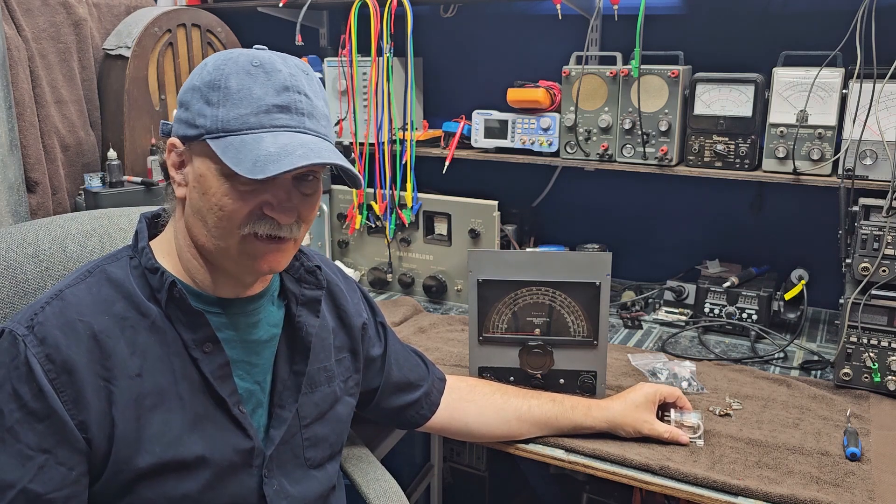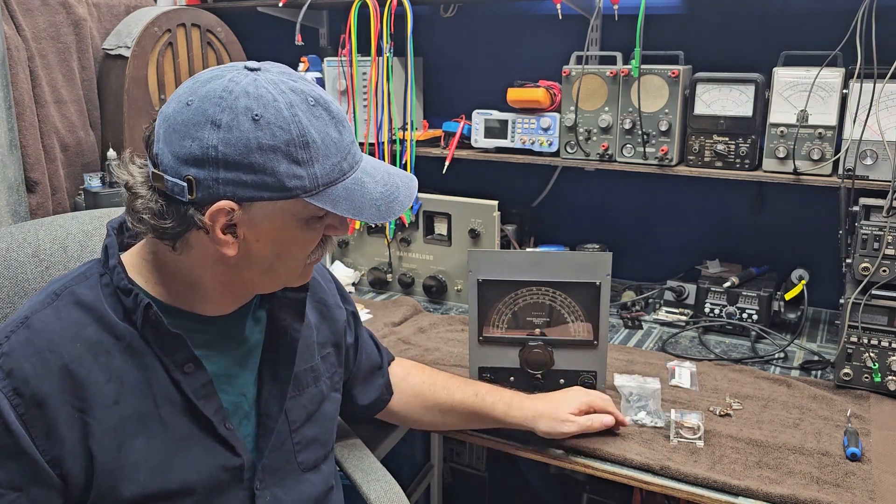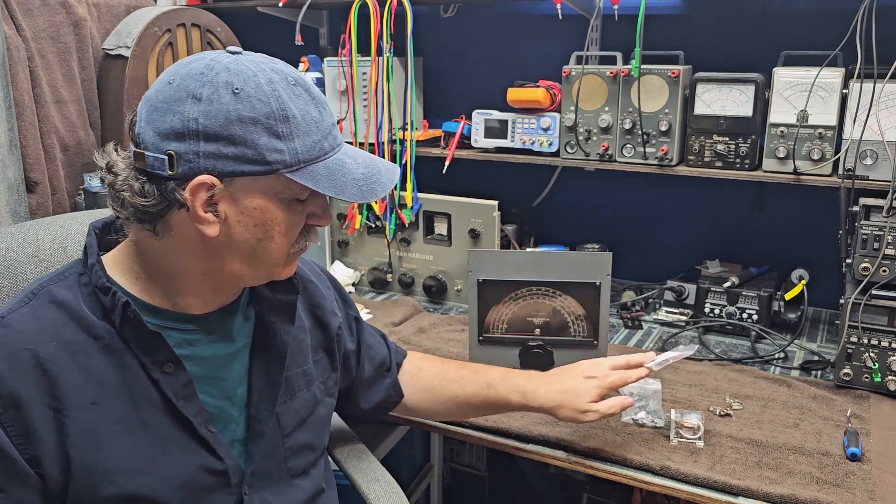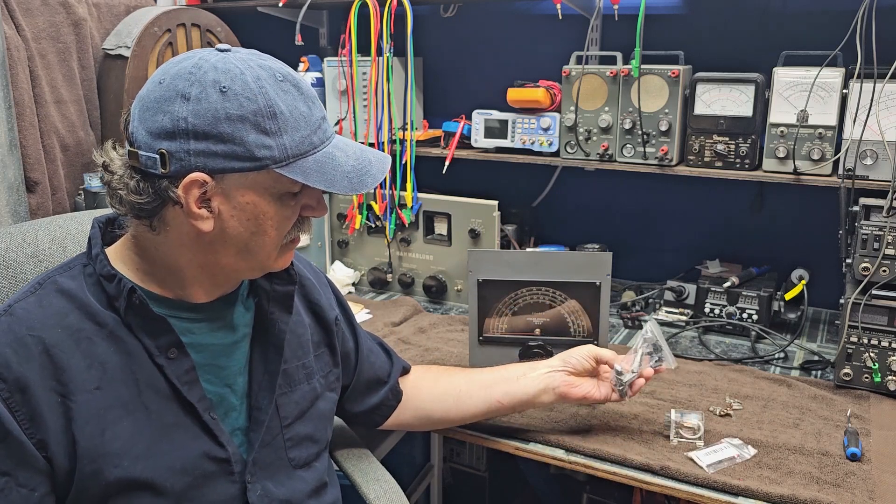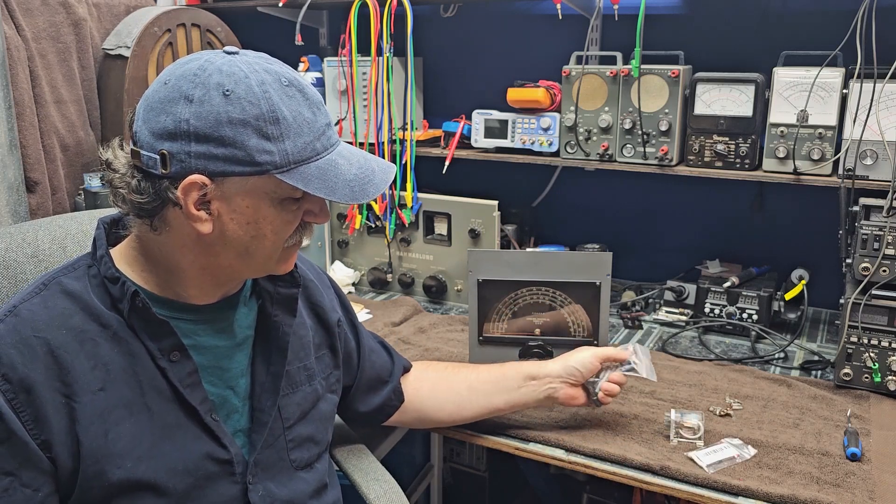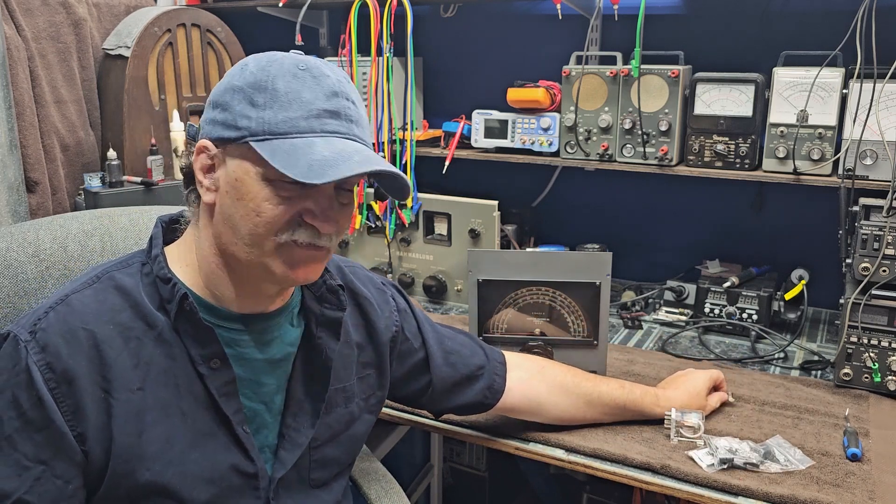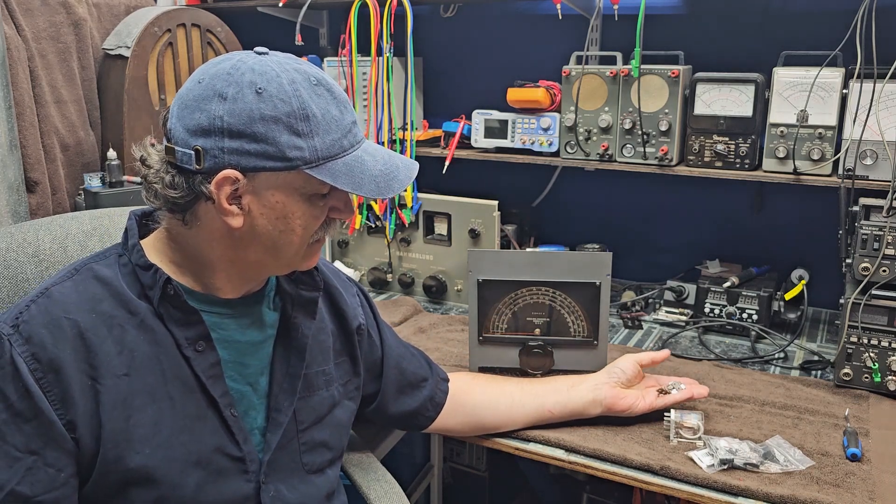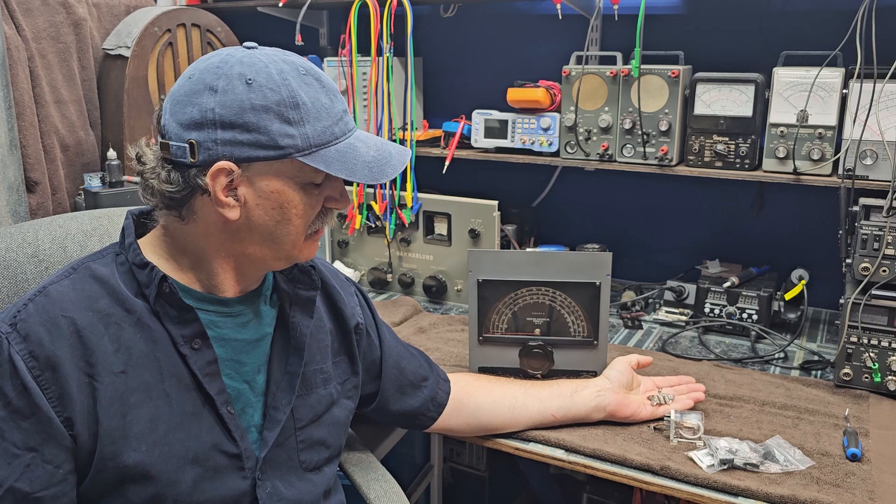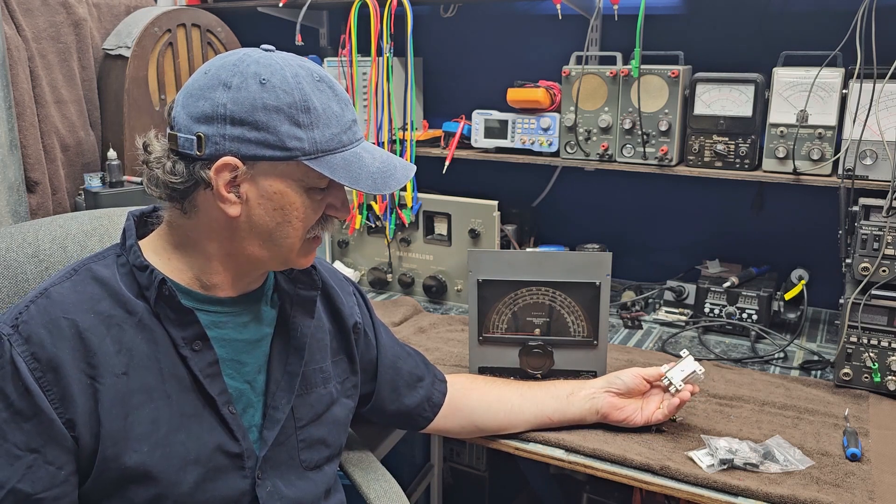This coil on this relay is 12 volts DC, and I have a 6.3 volt filament source inside. So I'm going to create a voltage doubler. I've got some 1N914 diodes, some 47 microfarad capacitors at 50 volts, and some terminal blocks here. The idea is to create a voltage doubler that's going to take my 6.3 volts AC and convert it to DC to drive the relay.